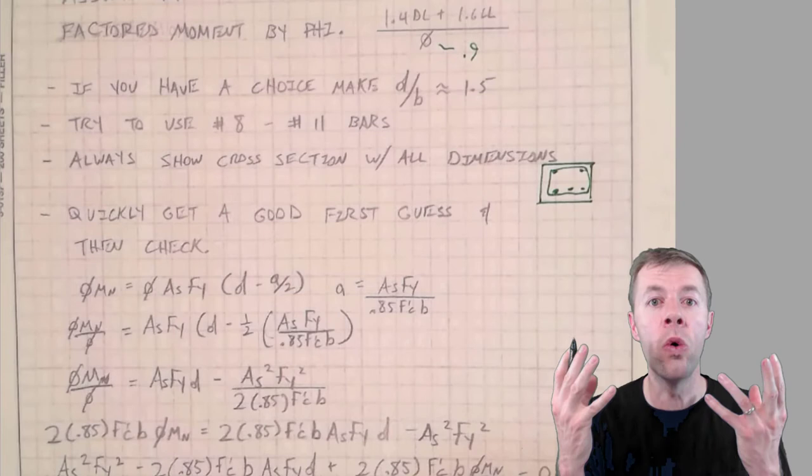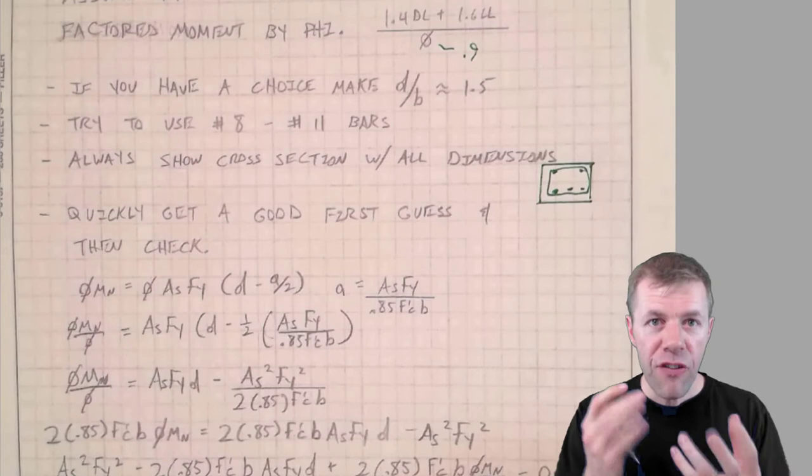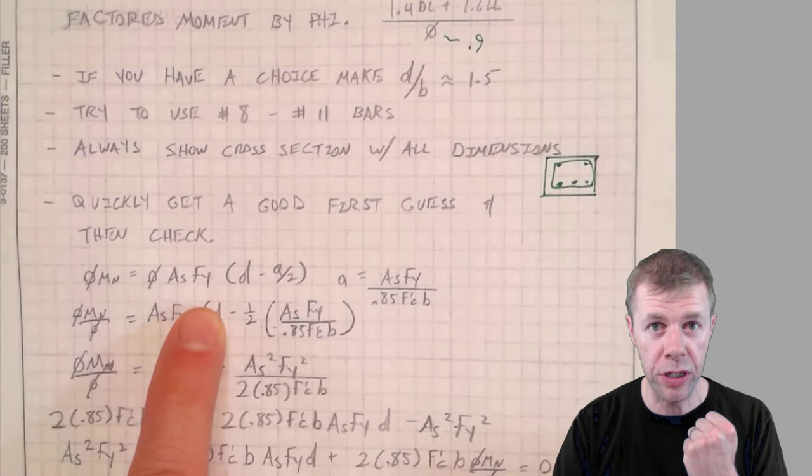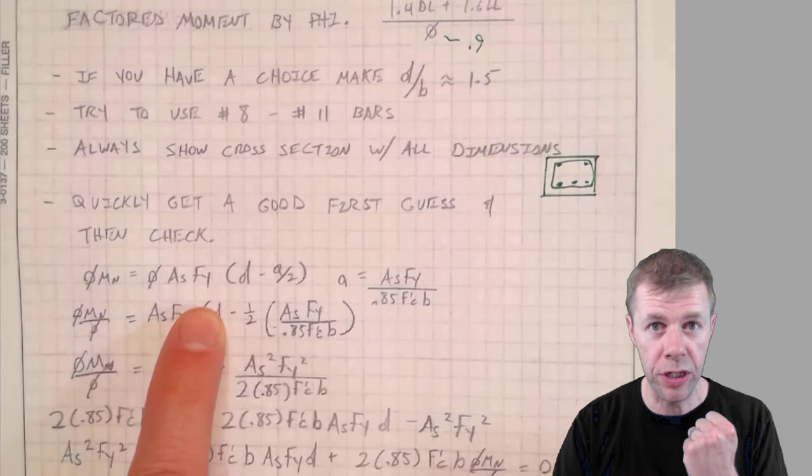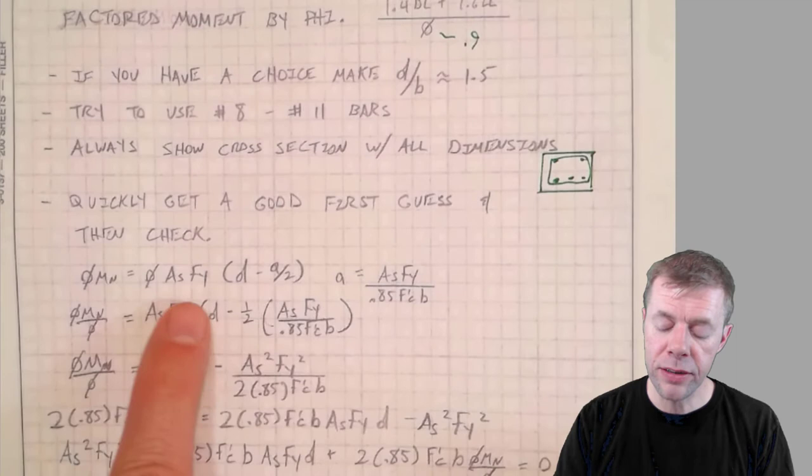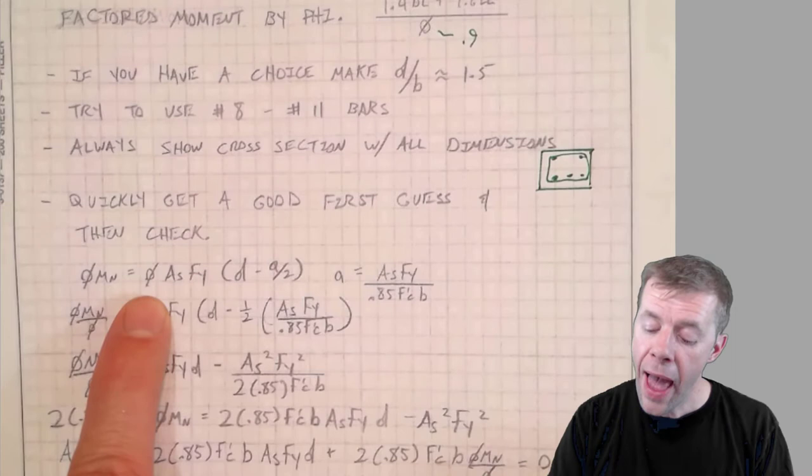If we look at our most important critical equation to find the nominal maximum moment capacity of a reinforced concrete beam, we know it's this: As·fy times (d minus a/2). And this phi we already talked about earlier—we can get rid of that if we want.